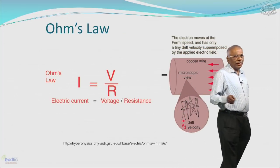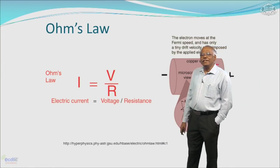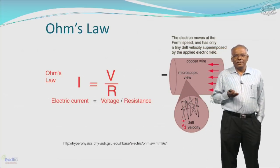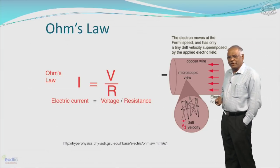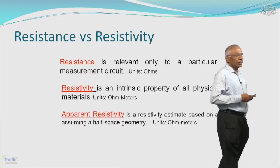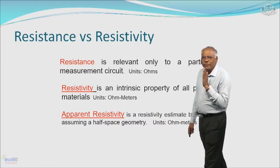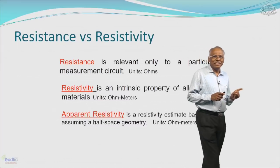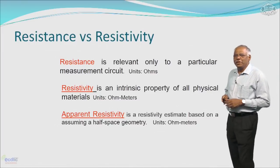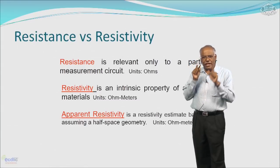Ohm's law — I = V/R, or equivalently R = V/I, potential difference divided by current — is used in the electrical resistance technique. The basic difference between resistance and resistivity is: resistance is relevant only for a particular measurement circuit, whereas resistivity is an intrinsic property of a physical material. In the case of rocks, we often use the term apparent resistivity, which is a resistivity estimate based on assuming half-space geometry.